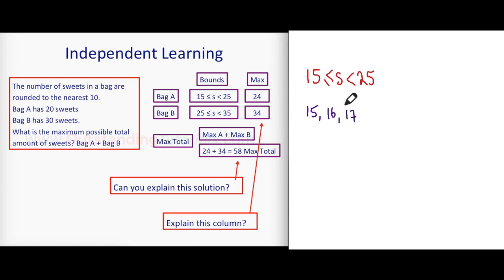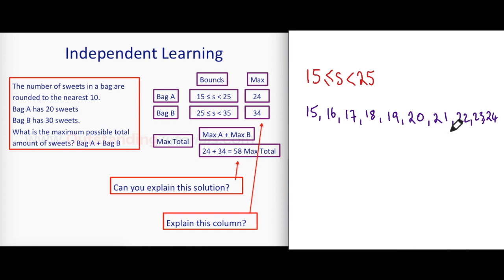17 you'll get 20, 18 you get 20, 19 you get 20, 20 of course round to the nearest 10 is 20. Now it switches. These ones round down to 20 because that's four or less so they'll go down. This is 22, 23, and 24, but not 25 because 25 will round up. So the largest possible value S can have here would be 24.